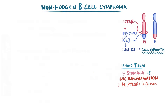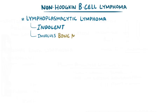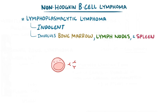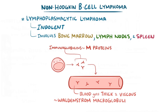A sixth type is lymphoplasmacytic lymphoma, also an indolent lymphoma. This form often involves the bone marrow, lymph nodes, and spleen, and the neoplastic cells sometimes produce immunoglobulins called M-proteins found in high levels in the blood. When this happens, the additional proteins cause the blood to be more thick and viscous, and the condition is called Waldenström macroglobulinemia.